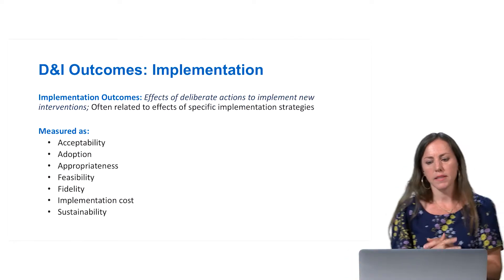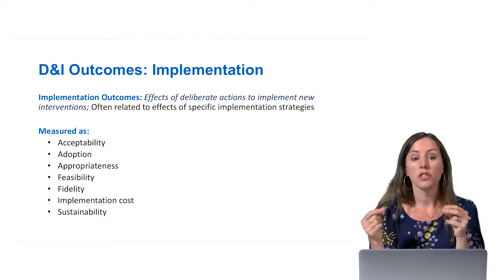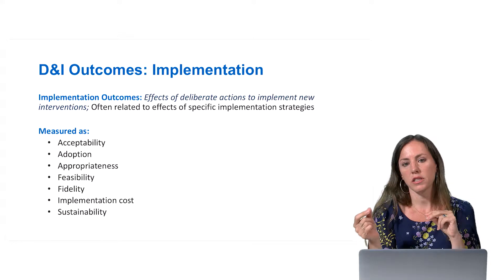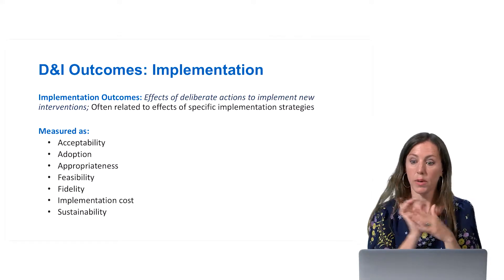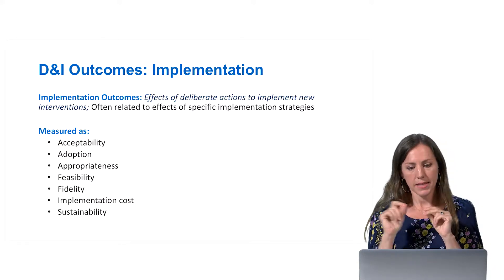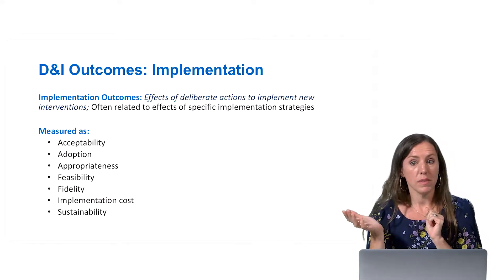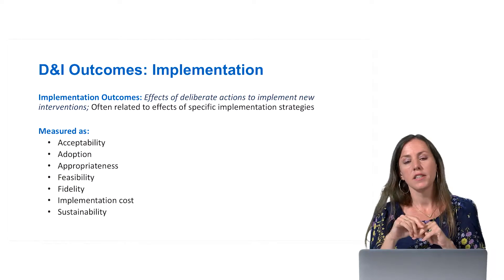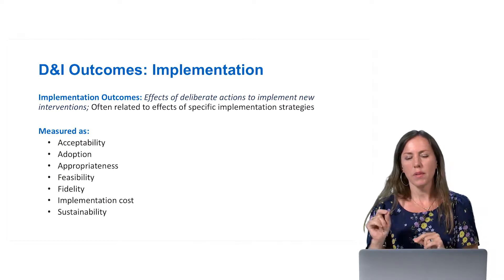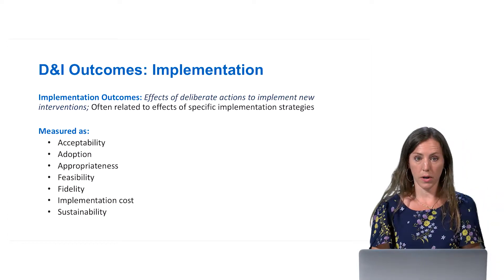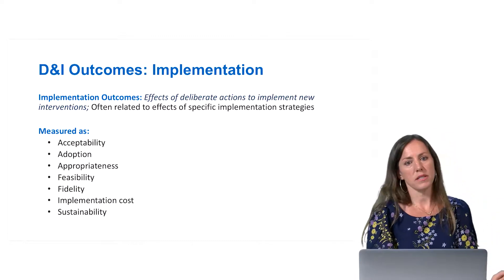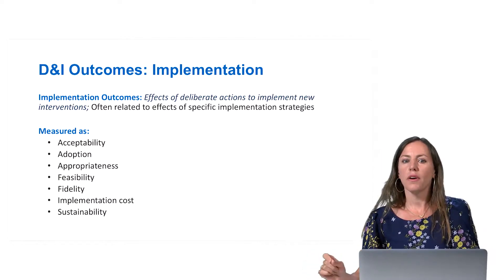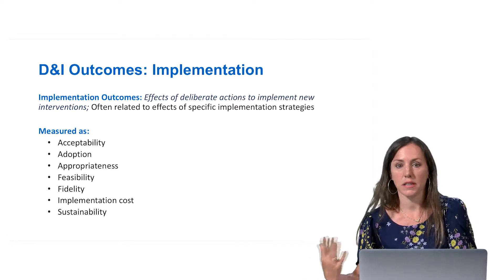Implementation outcomes are often the effects of our specific strategies or actions to implement the interventions. We'll have a whole session on implementation strategies. But it might be whether or not your implementation strategies were effective or successful. Maybe you have all the principals on board — based on your dissemination strategy, most say they intend to adopt it and in the next school year will have teachers trained to deliver this new HIV prevention curriculum. So implementation outcomes might be: given training, technical assistance, and teacher champions within the school, does that actually promote the actual delivery of the intervention?